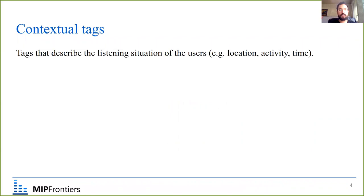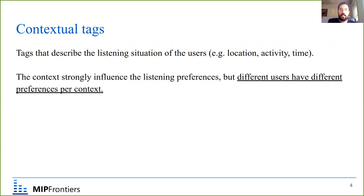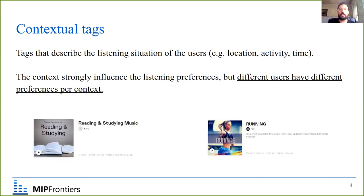What are contextual tags? Contextual tags describe the listening situation of the user — for example, the location, the activity, or the time. These contexts strongly influence the listening preferences of the user, but different users have different preferences for each context. We can see this clearly in user-created playlists, where the title reflects specific contexts, and different creators have different preferences for each context.